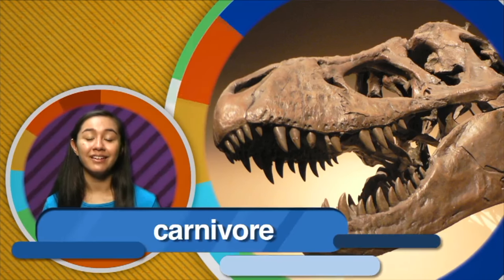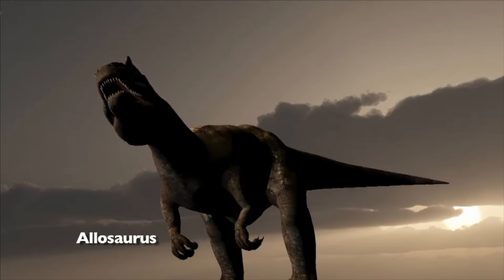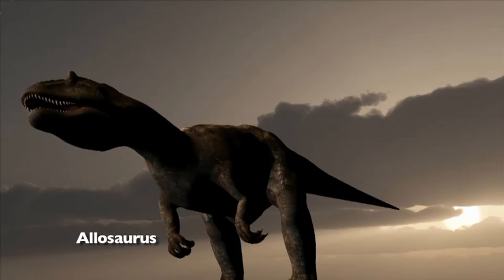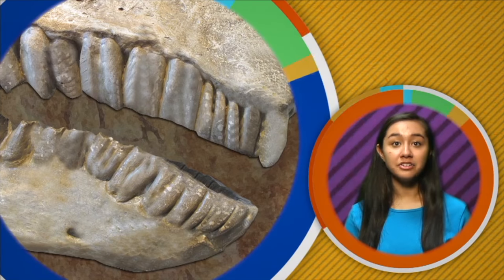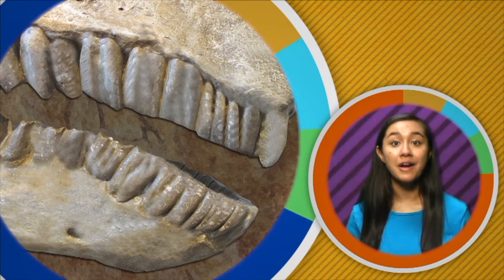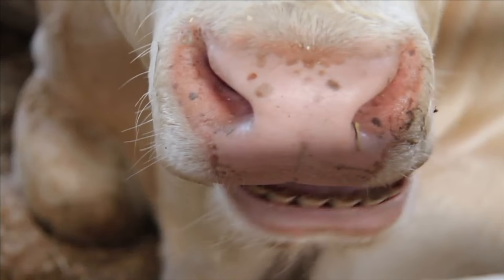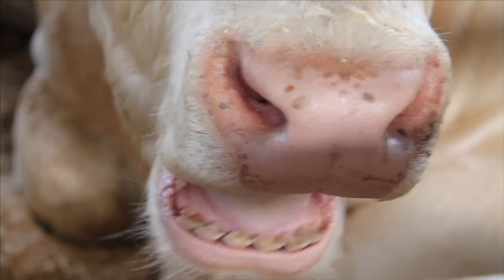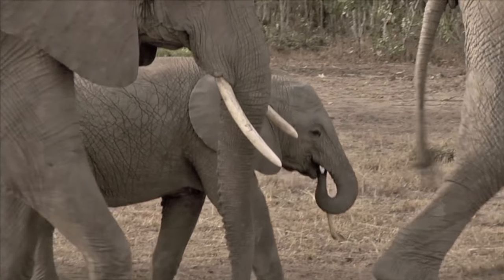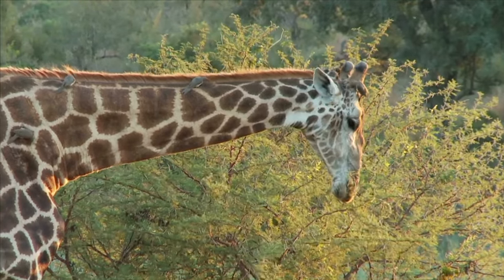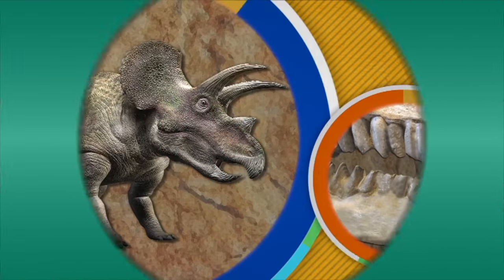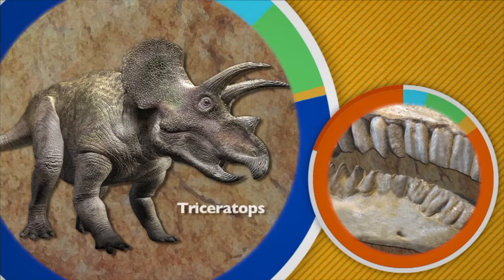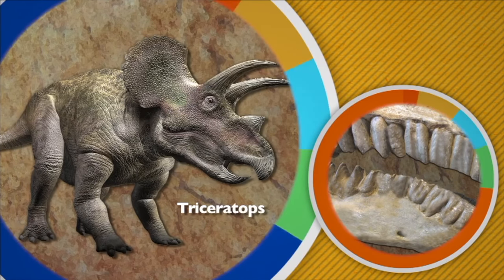Animals who eat meat are called carnivores. Allosaurus, a fierce predator, is an example of a carnivore — notice its sharp pointy teeth. Paleontologists have also found dinosaur fossil teeth that are round and flat. Today, animals with flat round teeth like cows, elephants, and giraffes are plant eaters. Plant eaters are known as herbivores. So it makes sense that a dinosaur with flat round teeth like Triceratops ate only plants too.